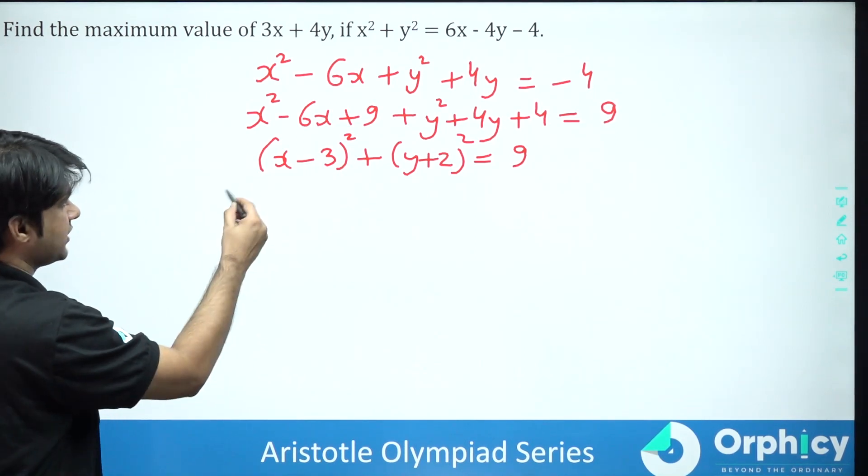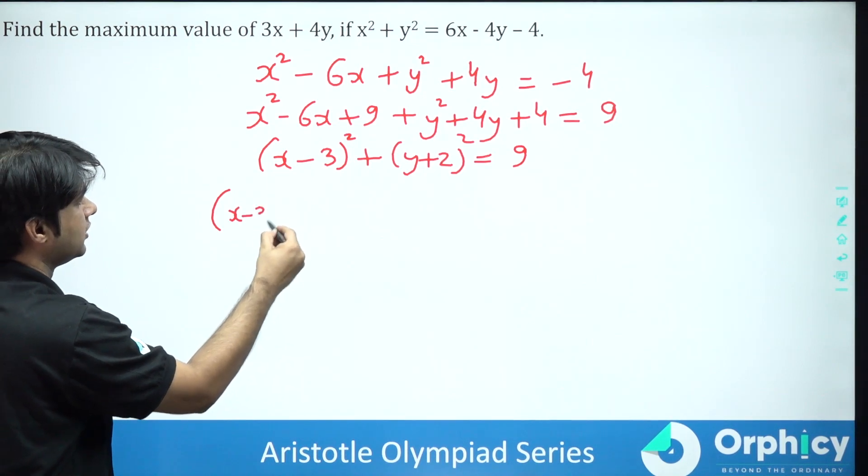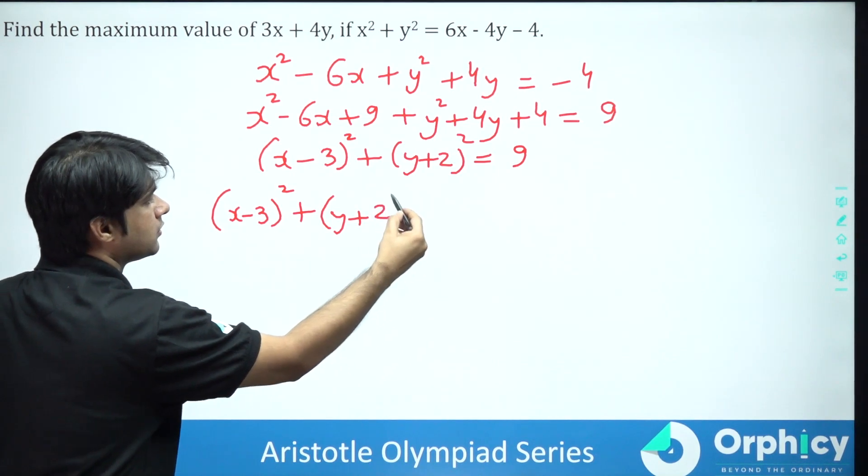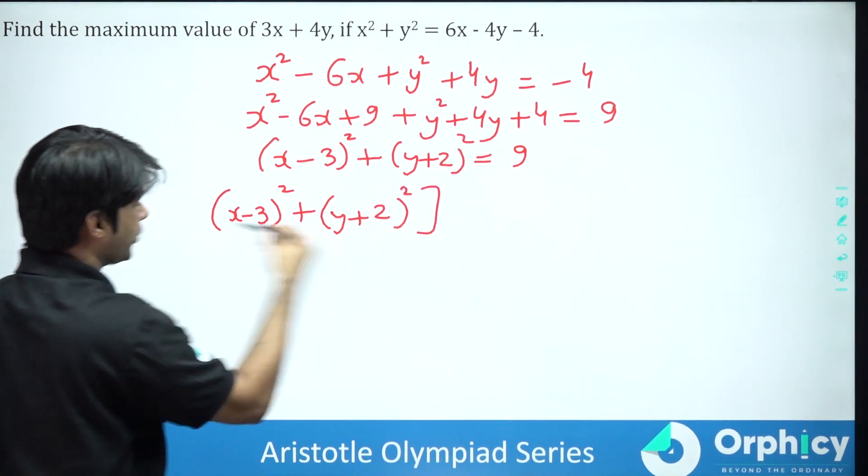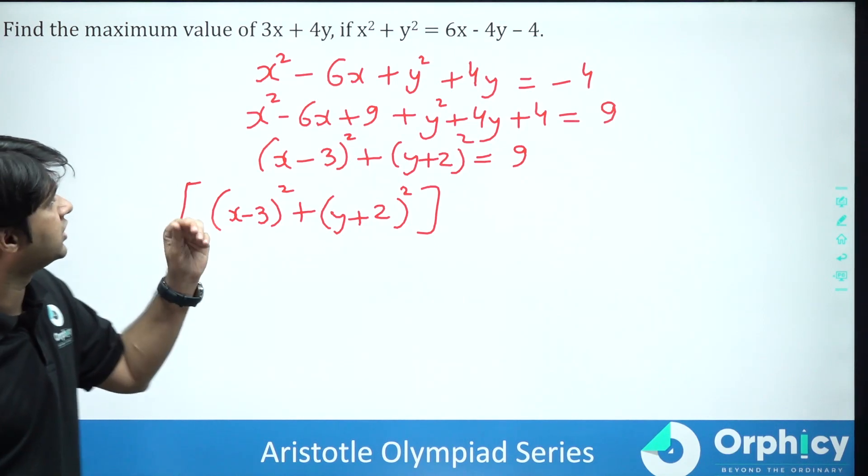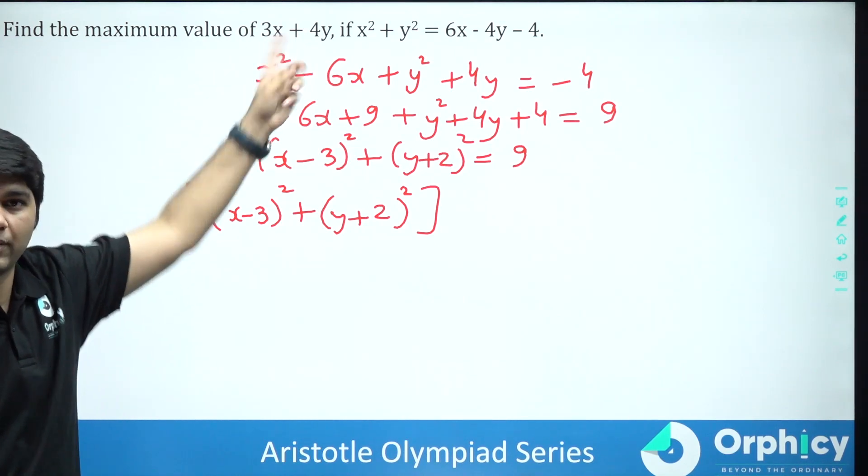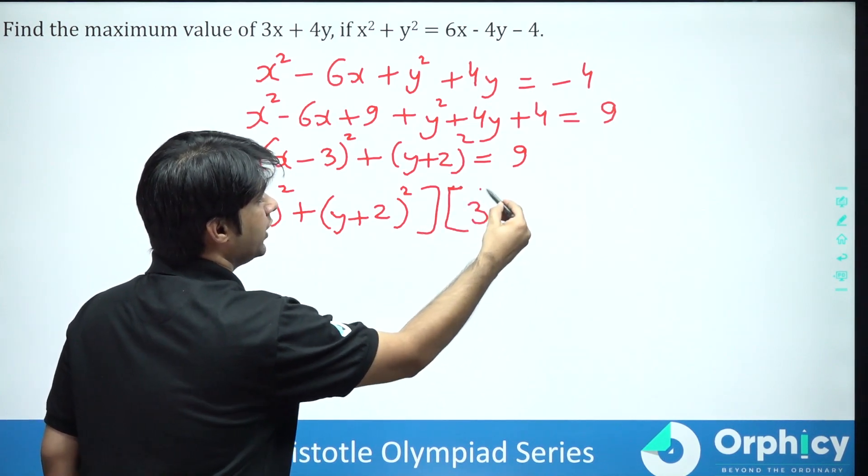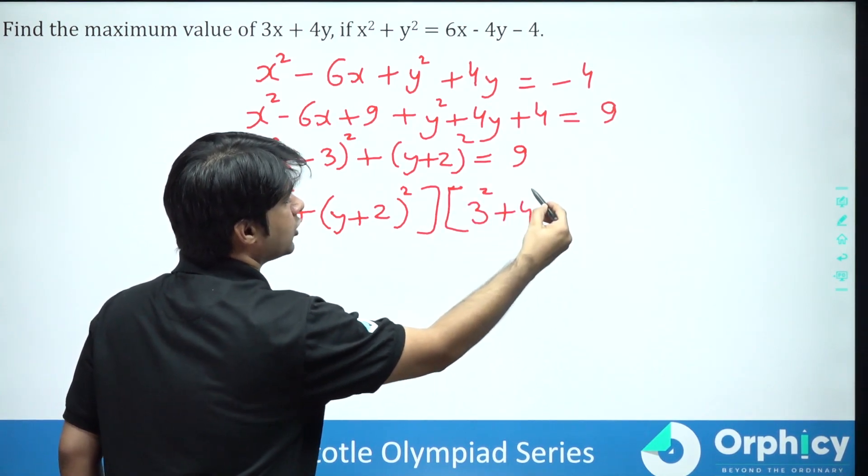Consider this one time. So this will be your x minus 3 the whole square plus y plus 2 the whole square. Now what will we do here? Multiply and what do we need? So I want 3x plus 4y. I need 3 or 4. So what I will do is I will take 3 square plus 4 square over here.